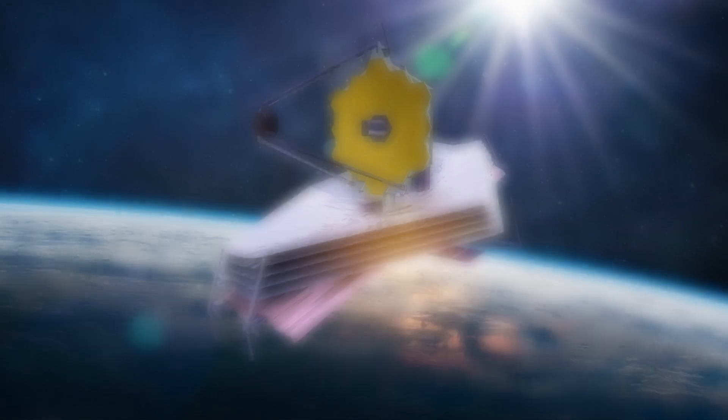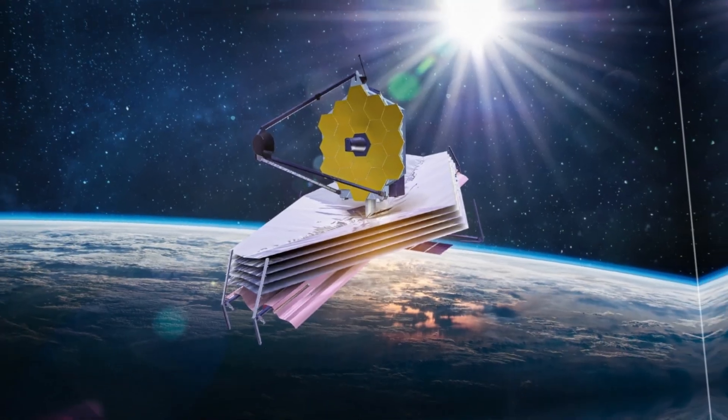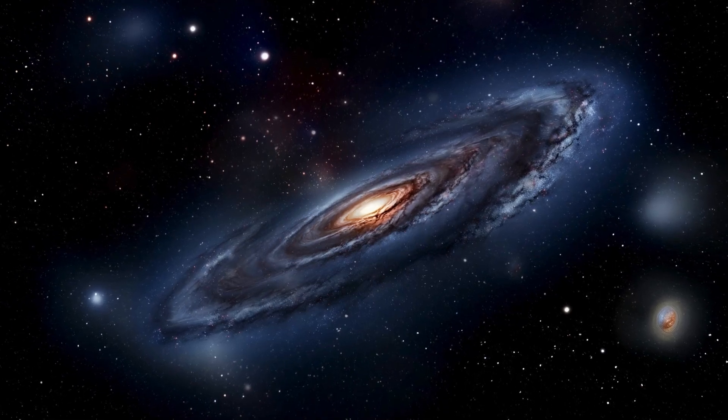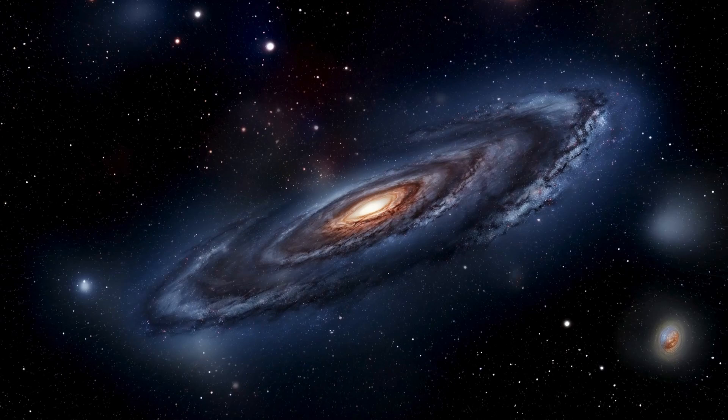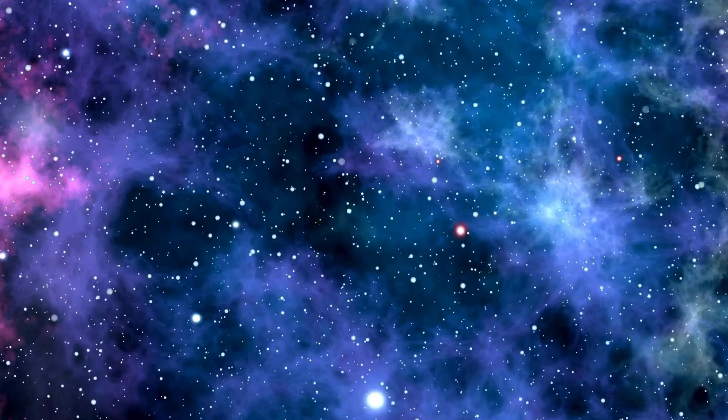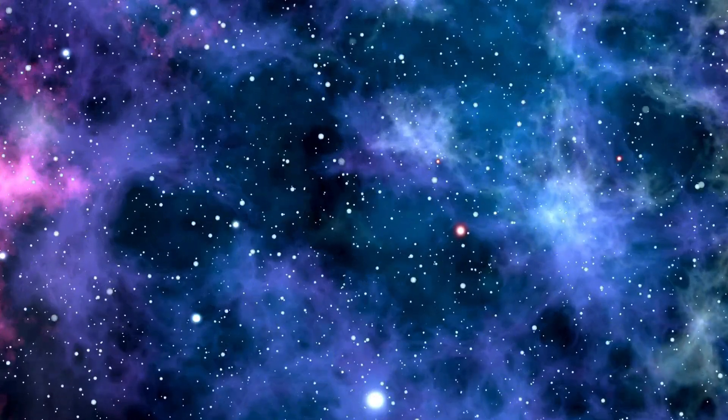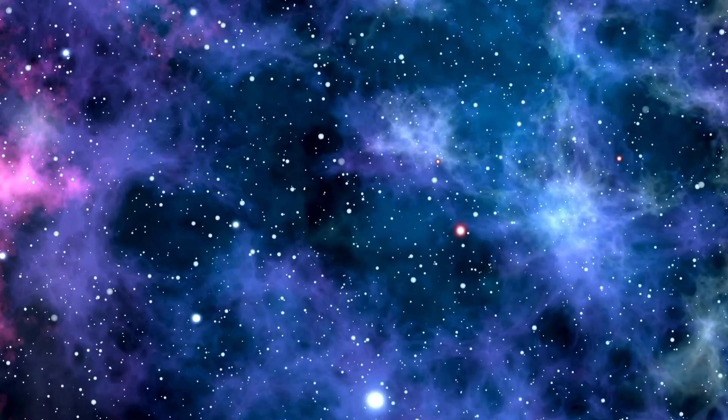The James Webb Telescope has recently achieved an astronomical milestone by capturing the most detailed image of Proxima b, an exoplanet located in our galactic backyard. This breakthrough has illuminated incredible features of this world, suggesting its potential to support life.